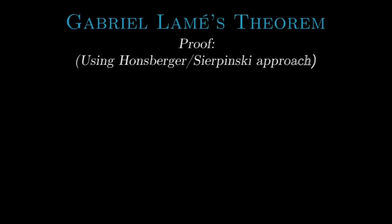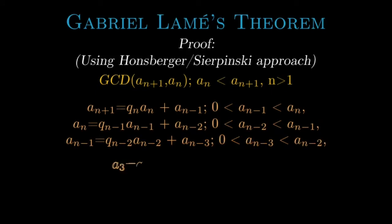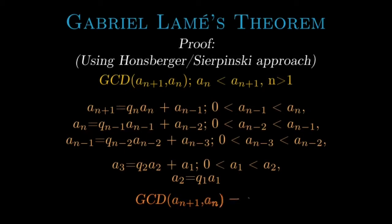The approach here is the one given by Honsberger or Sierpinski. Suppose you need to calculate the GCD of two numbers, a_{n+1} and a_n, where a_n is the smaller number, and it takes n steps, where n is greater than 1. By the Euclidean algorithm, you can see that we have the following. And hence, the GCD of a_{n+1} and a_n is the last non-zero remainder obtained, that is a_1.